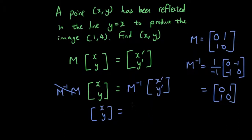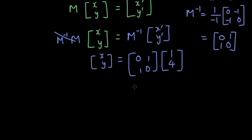Just make sure you go through this step regardless of what matrix it is. So therefore we substitute the inverse of M over here and then we multiply by the image. So the image is 1 and 4.